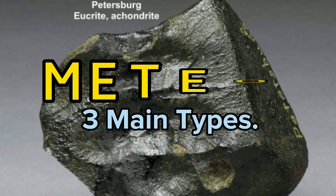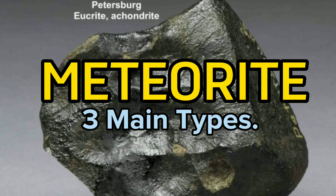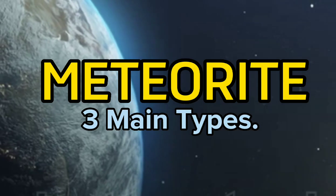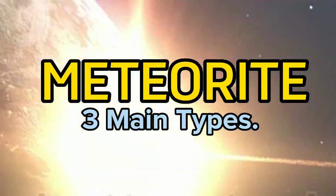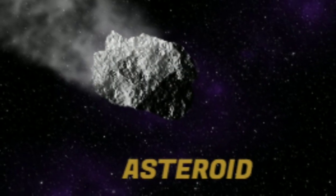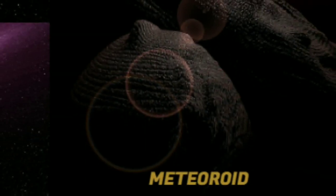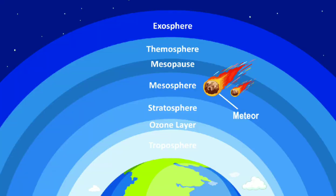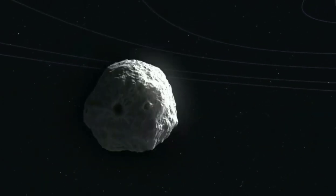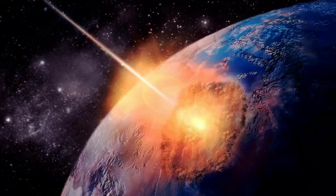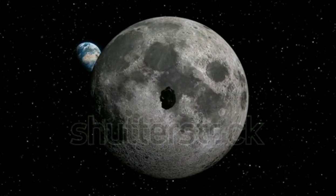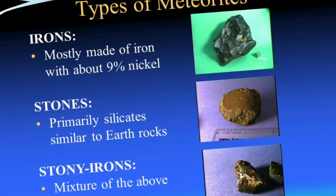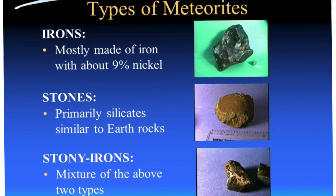A meteorite is a solid piece of debris from an object, such as a comet, asteroid, or meteoroid, that originates in outer space and survives its passage through the atmosphere to reach the surface of a planet or moon. There are three main groups of meteorites.